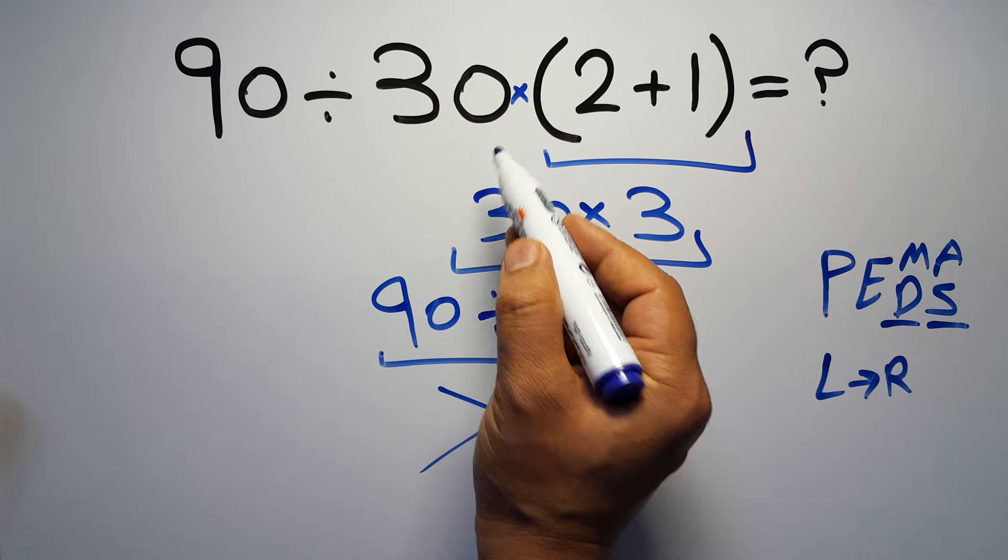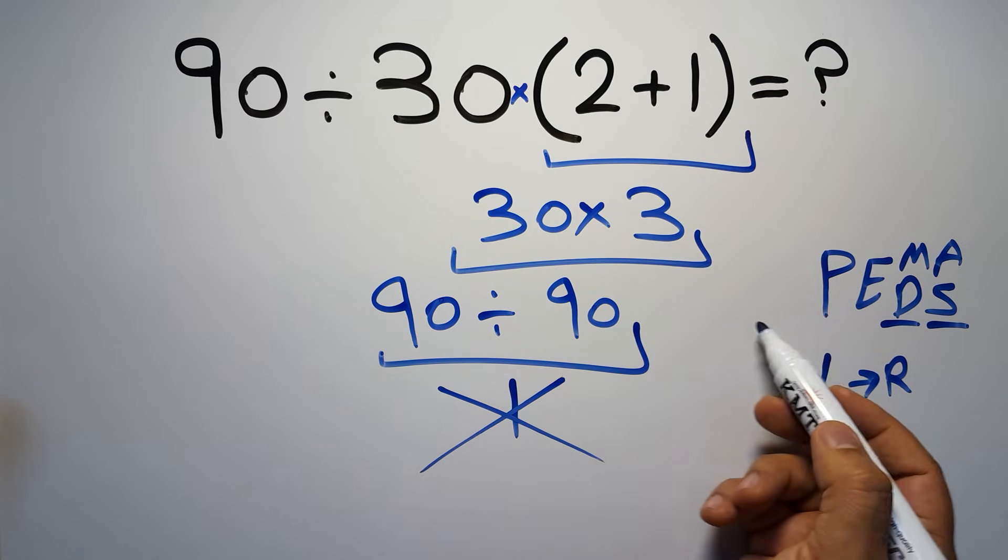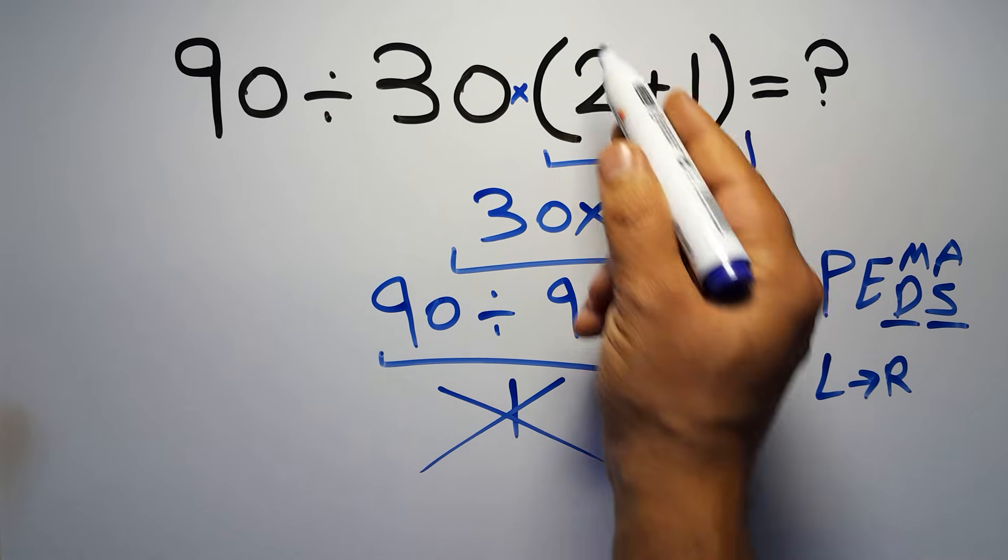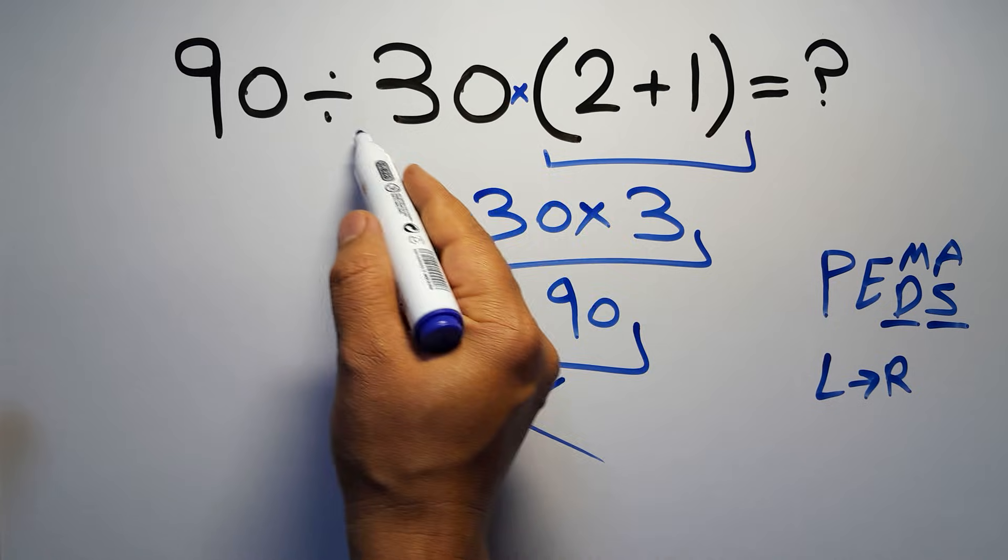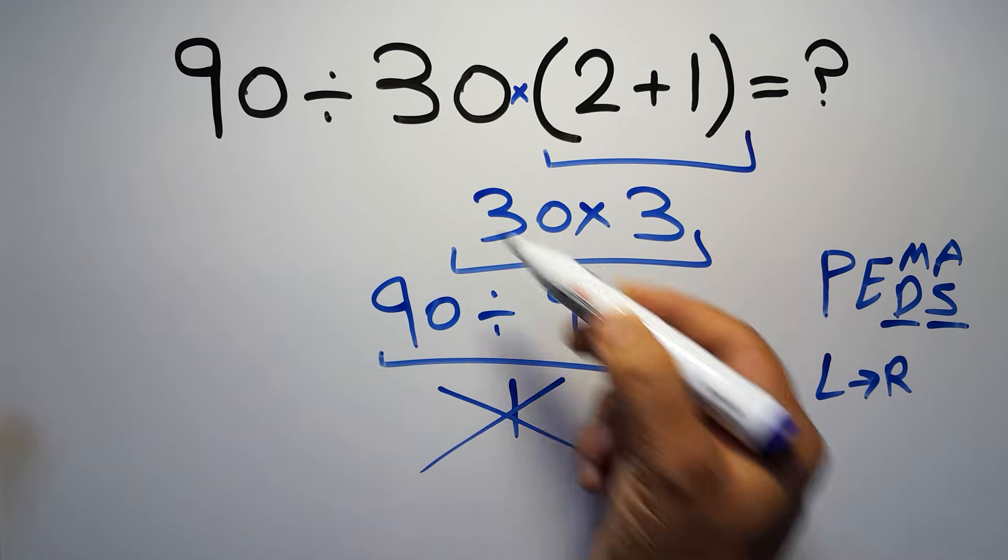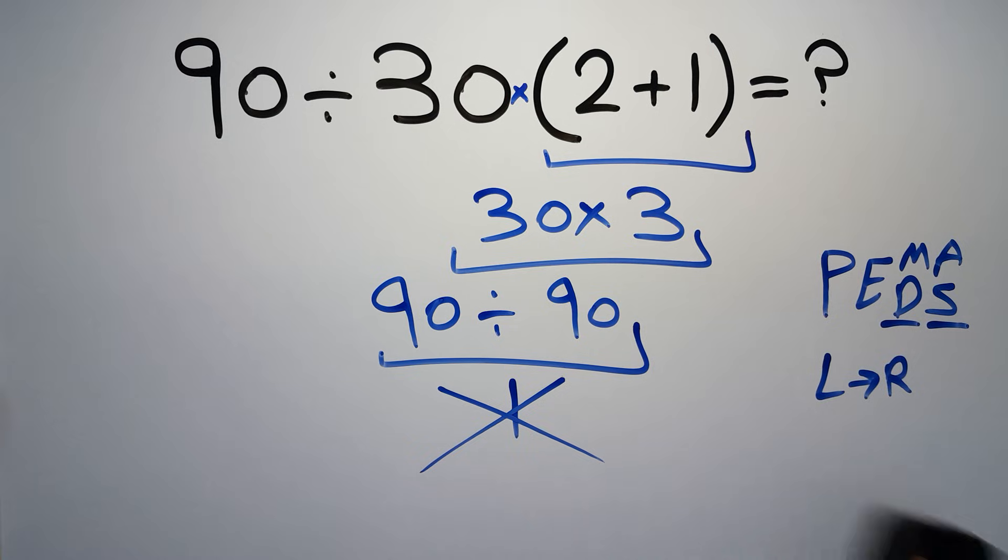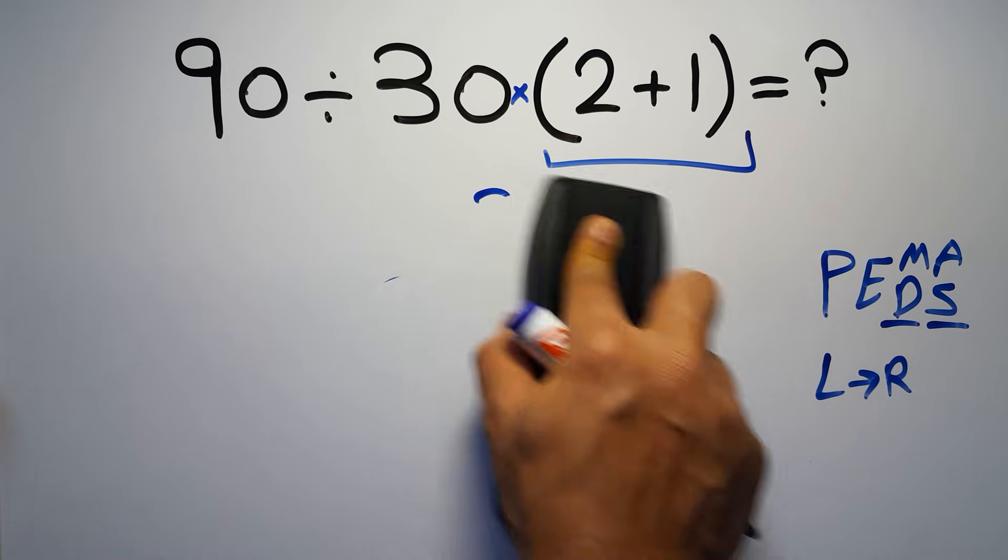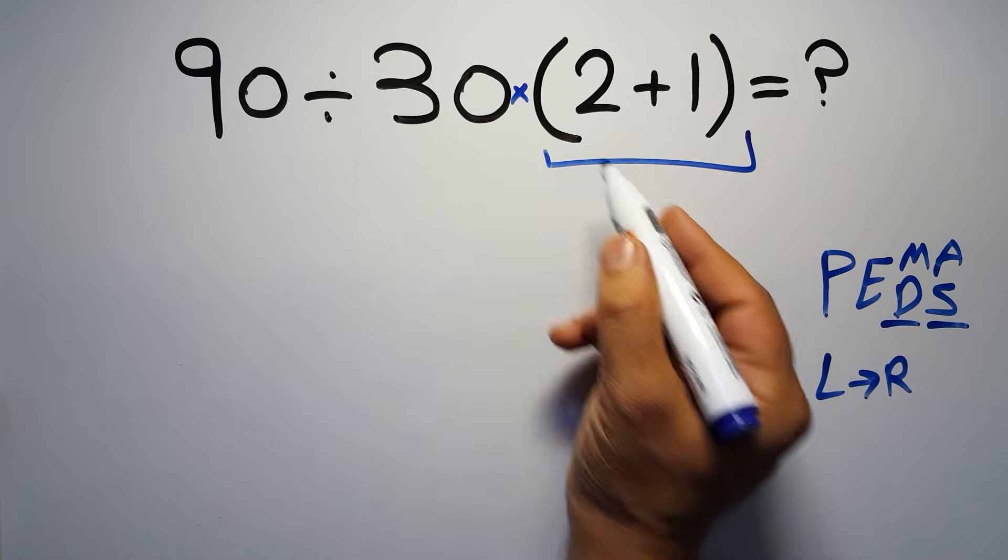So according to PEMDAS, first we have to do the parentheses, then the division, and finally the multiplication. If we do the multiplication before the division, it is wrong.